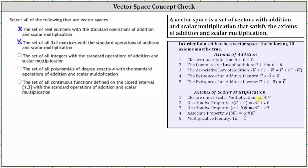For example, if we let a equal one half and multiply by the integer three, this gives us three halves or 1.5, which is not in the set of integers. This is why we don't have closure under scalar multiplication. We can conclude the set of integers is not a vector space.